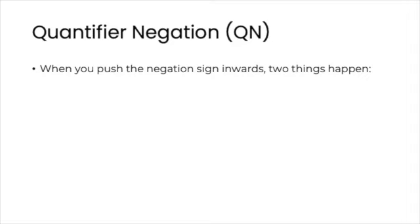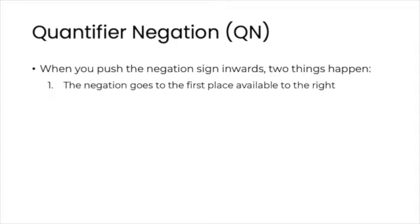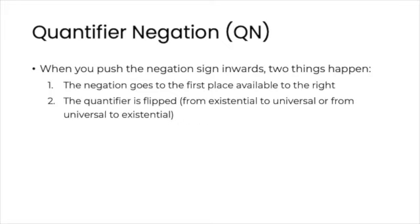When you push the tilde inwards, inside the scope of a quantifier, two things happen. One: the negation goes to the first place available to the right, and so it ends up being attached to the first complete formula it meets on its way in. Second, and very important, the quantifier is flipped from existential to universal, or from universal to existential, depending on where you started.